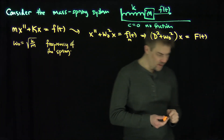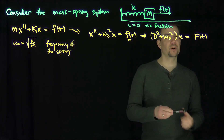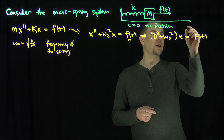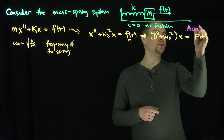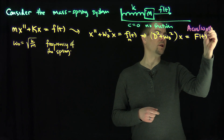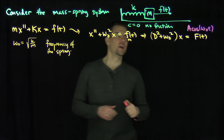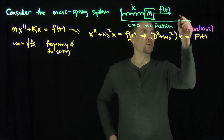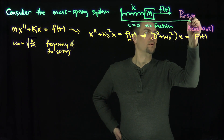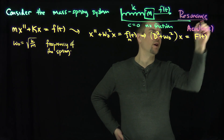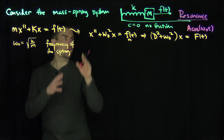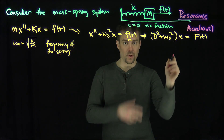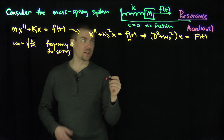The case that exhibits resonance is the following. If the force f of t is a cosine of ω₀t or a sine of ω₀t, then this is the situation where we have resonance. Let's figure out the fundamental properties of the solution to this equation and then figure out why this is going to exhibit resonance.